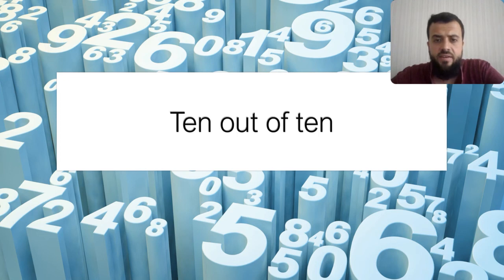And finally, ten. Ten out of ten, it means the perfect score. For example, I ask you, what do you think about that restaurant? You say, oh, it's ten out of ten. If you want to give it a mark, if you want to grade it, you will give it the full score, ten out of ten.